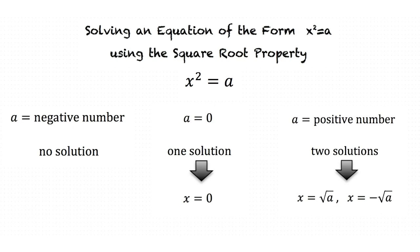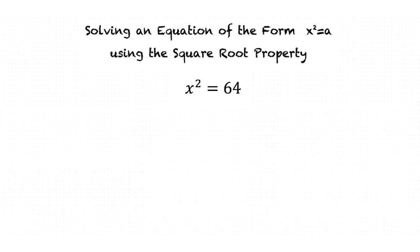I understand the first two rules but I'm sort of confused about the third rule when a is positive. Let's look at an example. x squared is equal to 64.